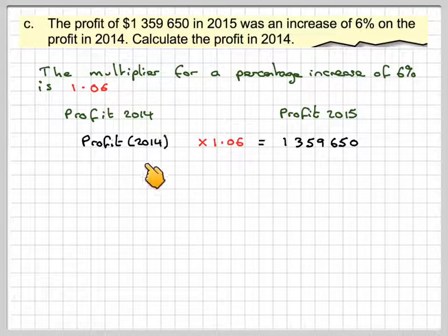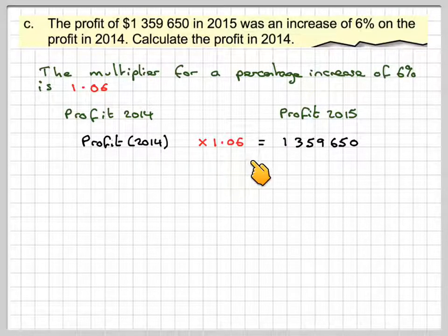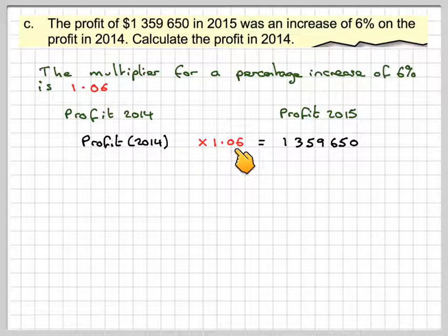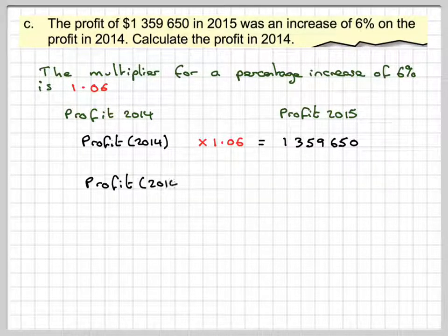So, we've got the profit for 2014 times 1.06 is equal to 1,359,650. So, in order to find this, we need to take this value and divide it by the multiplier. This is a reverse percentage type question.